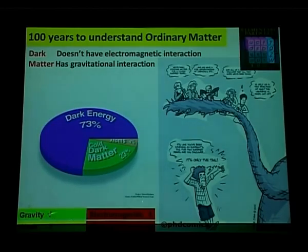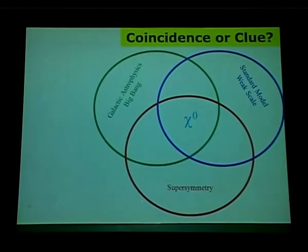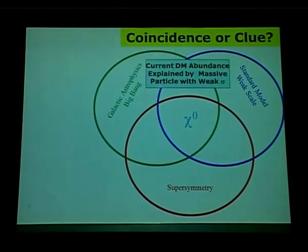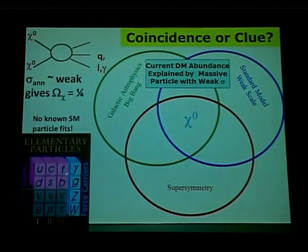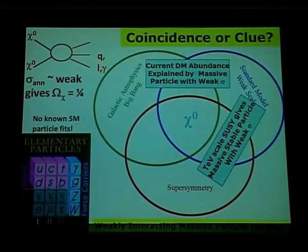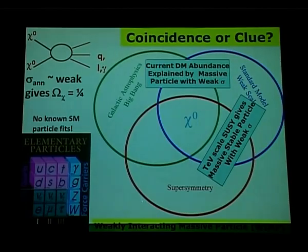So we're looking for a particle that has weak interaction. Based on astrophysical measurements that one quarter of the universe is dark matter and using standard model particle physics, it turns out it should be a heavy particle with weak interaction cross-section. When you look at the standard model, you don't see such a particle. It must be something beyond the standard model. It turns out that supersymmetry at the TeV scale gives rise to the same candidate — a weak interaction massive particle (WIMP). That's the most compelling candidate we're looking for.